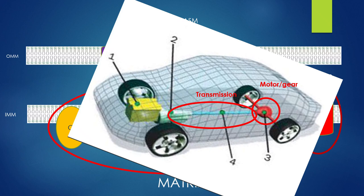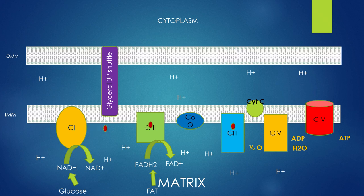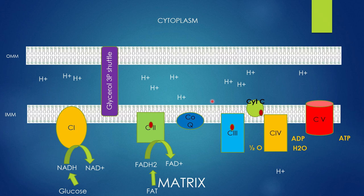When you eat food in the form of carbohydrates and fat, it enters the mitochondria and the mitochondria extracts electrons. The mitochondria doesn't care what you eat, as long as it can extract electrons to make ATP. Glucose and fat come in, electrons are extracted, and they bounce from one complex to the next. In that process, protons are pumped from the inner space to the outer space, building up a gradient. The protons cascade down the motor, rotate it, and make ATP.